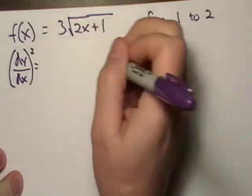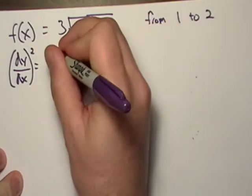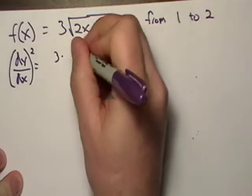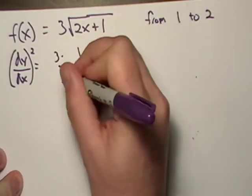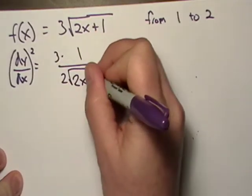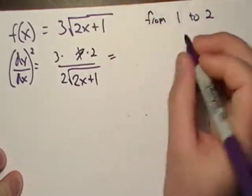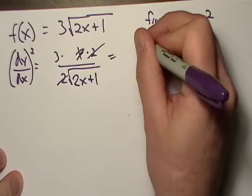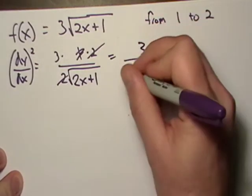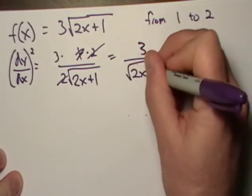What's the first derivative? That's going to be 3 times 1/(2√(2x+1)) times 2 by chain rule. Oh, the twos cancel out. That gives me 3/(2√(2x+1)).